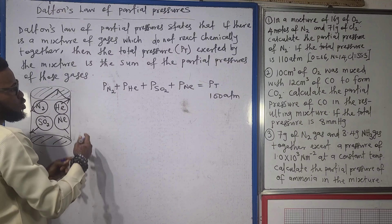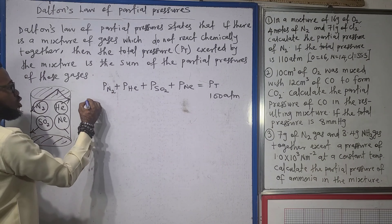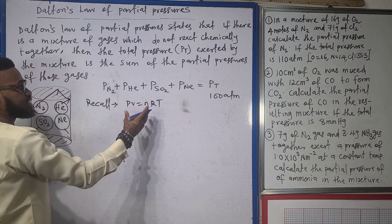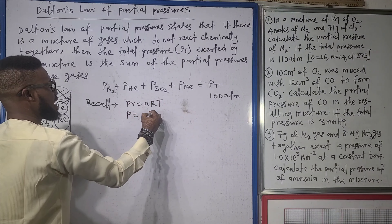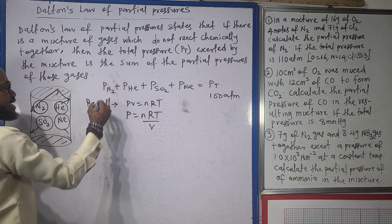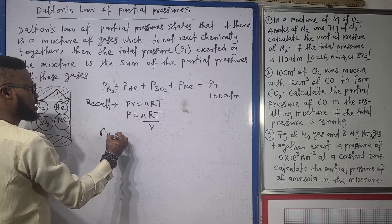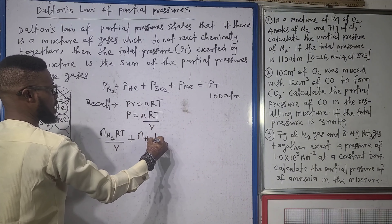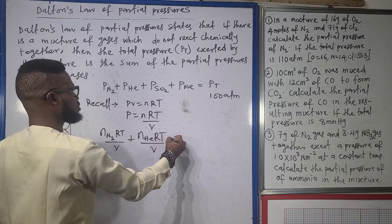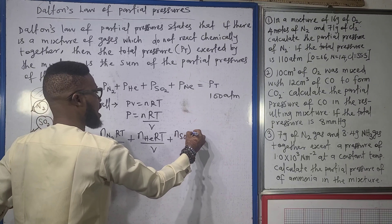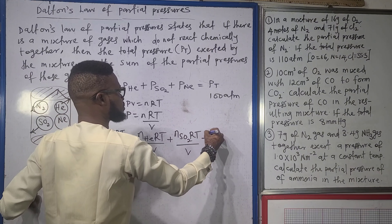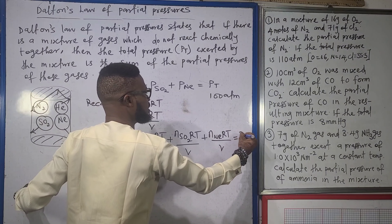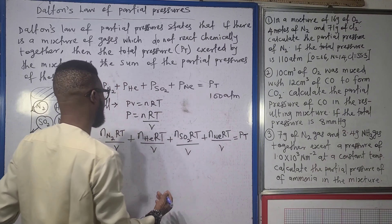Recall that pV = nRT according to the ideal gas equation. In this regard, pressure equals nRT/V. That means the pressure of nitrogen is going to be the number of moles of nitrogen times RT/V; that of helium is number of moles of helium times RT/V; sulfur dioxide is number of moles of SO₂ times RT/V; and neon is number of moles of neon times RT/V — and all of these sum to the total pressure PT.